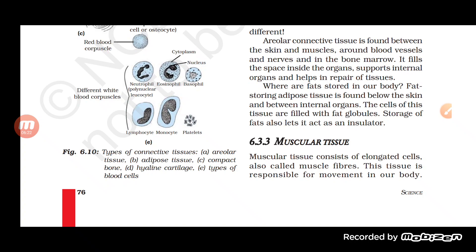Adipose tissue consists of fat globules, and the cells of adipose tissue are called adipocytes. Adipocytes help in storage of fats and act as an insulator. They help prevent mechanical shock, store fat, and help in maintaining body temperature.